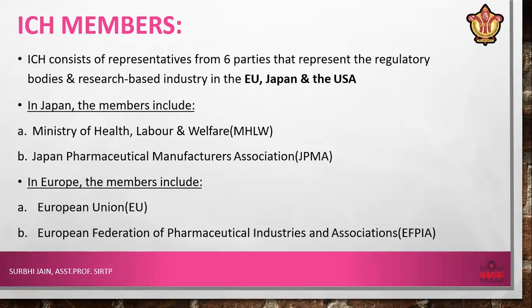Who are the ICH members? ICH consists of six parties that represent the regulatory bodies and research-based industry in Europe, Japan, and USA. As we know, for India the regulatory authority is CDSCO. Similarly, in Japan, the members in ICH are from MHLW, that is the Ministry of Health, Labour, and Welfare, and JPMA, the Japan Pharmaceutical Manufacturers Association. One thing to note is that the committee is organized from both regulatory body members and research-based industry, so that the regulatory body provides approval and the research-based industry provides knowledge about quality control and safety data of drug products.